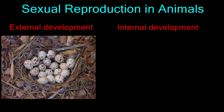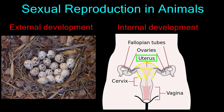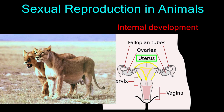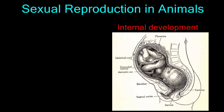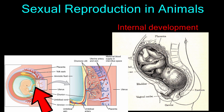Internal development means the embryo grows not inside an external egg, but inside a specialized female organ called the uterus. Internal development in the uterus allows animals — mostly mammals — to carry on life activities without having to guard a nest or incubate the eggs. Internal development is advantageous to survival since the uterus provides a more controlled environment while the placenta and umbilical cord provide constant nutrition to the developing embryo. Inside the uterus, embryos are also more protected from predators.